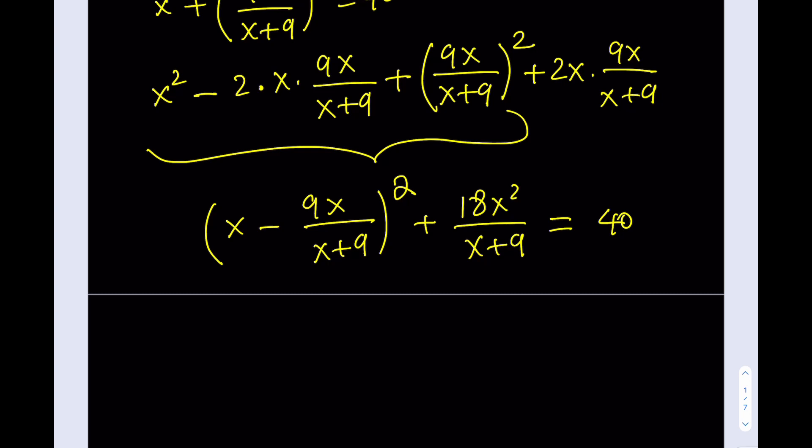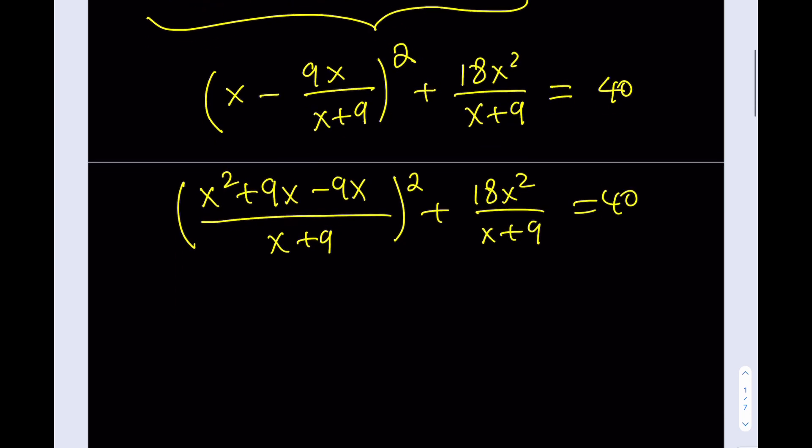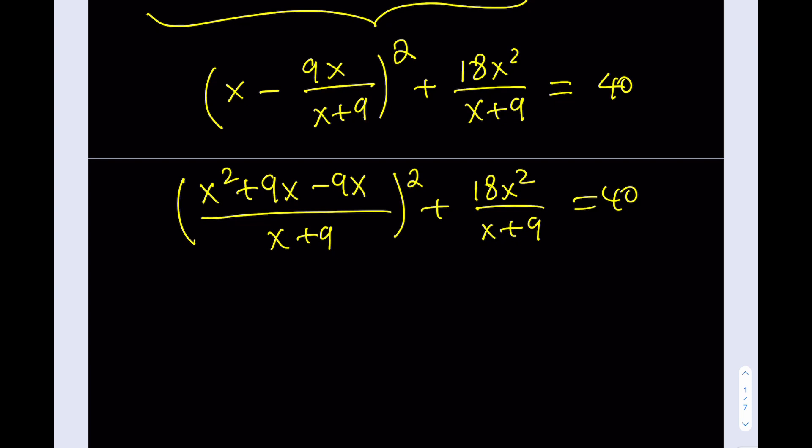It's going to look like x minus 9x over x plus 9 squared. You can see here, a squared minus 2ab plus b squared turns into a minus b quantity squared. Plus, if I multiply these, it's going to give me 18x squared over x plus 9, and the whole thing equals 40. This is our first method.